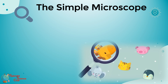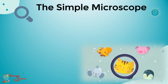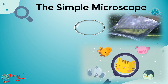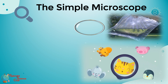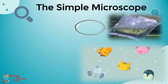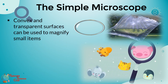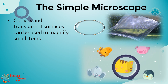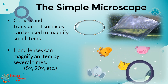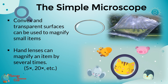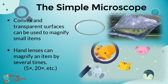Let's start with the simplest tool: the simple microscope, or the hand lens. Not only hand lenses — polythene bags filled with water, glass spheres, or glass bottles can also be used as a simple microscope. You can see two common features in all these items: they have convex or protruded surfaces, and they are transparent. Hand lenses can magnify an item by five times or even 20 times. Remember, it cannot magnify items which we cannot see from the naked eye.